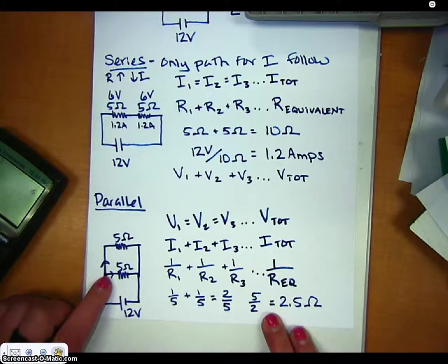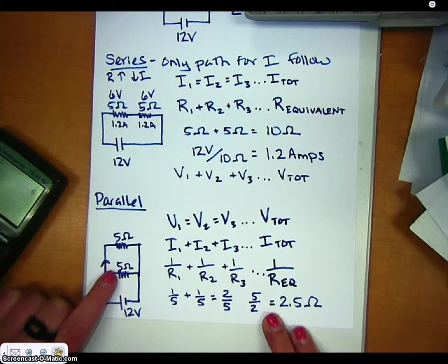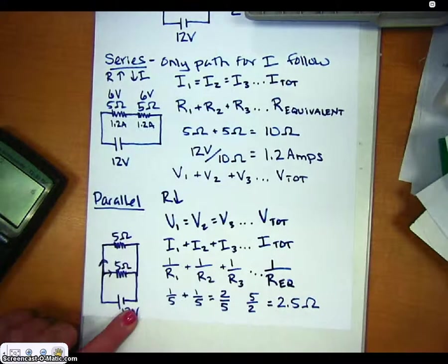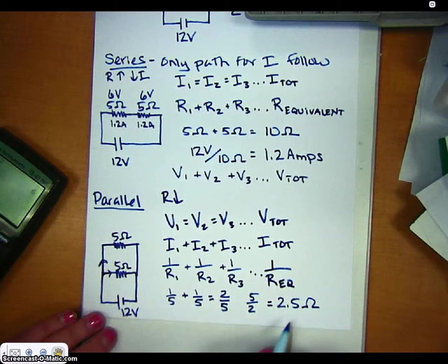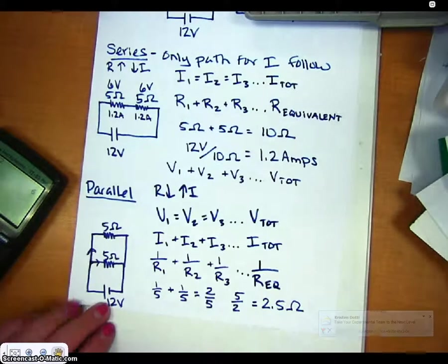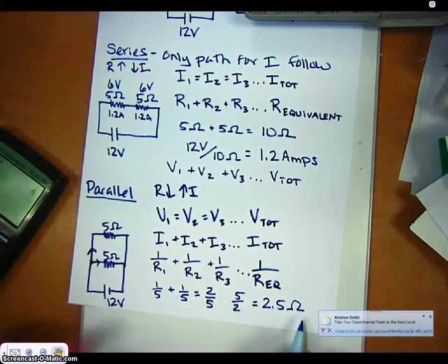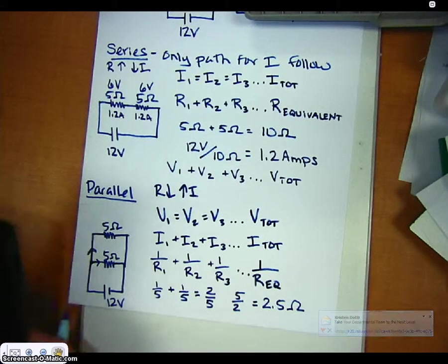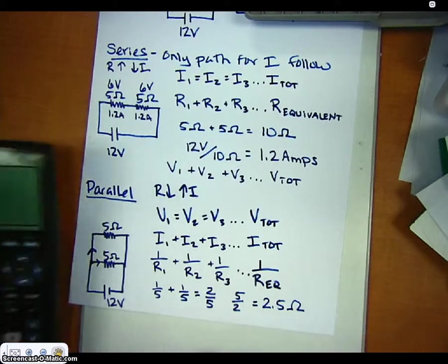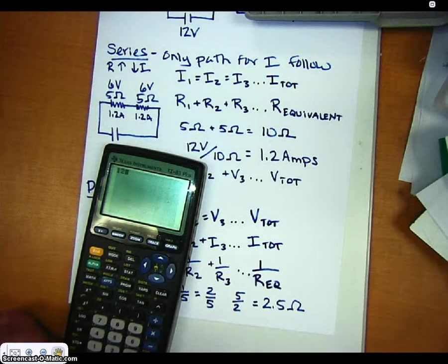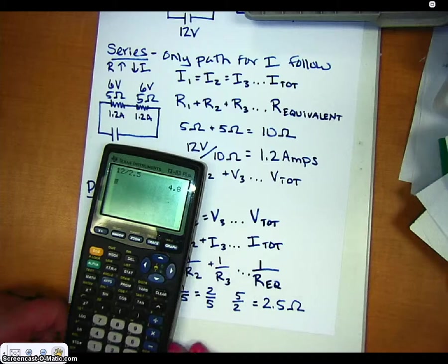So you can see, by putting these 5 ohm resistors in parallel with one another, I've actually caused the resistance to go down. So if the resistance goes down, then the current must go up. So let's go ahead and just figure out what is the actual I total. So you get 12 volts, and you divide it by 2 and a half total ohms, and I get 4.8 amps.